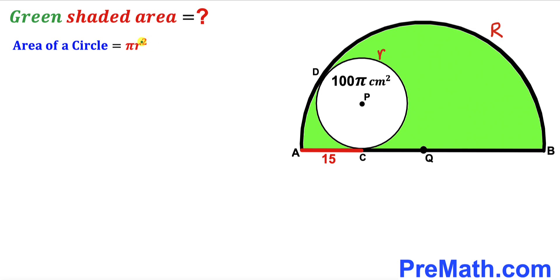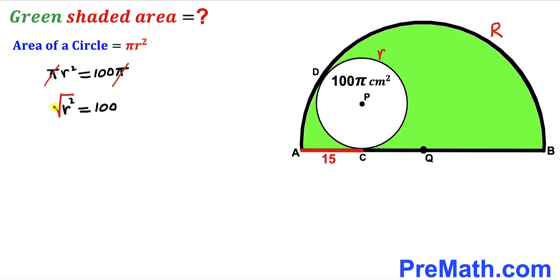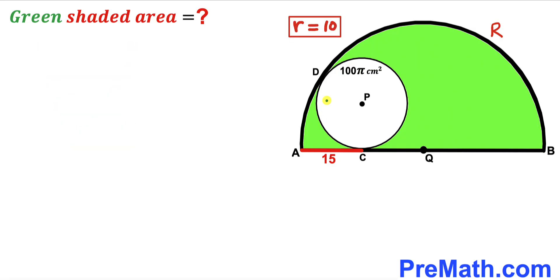The area equals π times r², where lowercase r is the radius of the white circle. Since the area is given as 100π, we write π·r² = 100π. Cancelling π from both sides and taking the square root, the radius lowercase r turns out to be positive 10 centimeters.